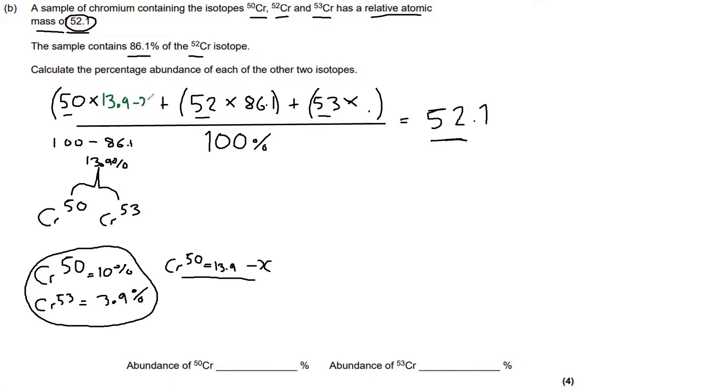So chromium-50 times 13.9 minus x plus 52 times 86.1 plus 53 times x over 100. So we've rewritten our equation, and we know that 53 will be x. In my little made-up one down here, it was 3.9, and chromium-50 would have been 10. So 13.9 minus 3.9. But that's made up. So now we're going to rewrite this equation.